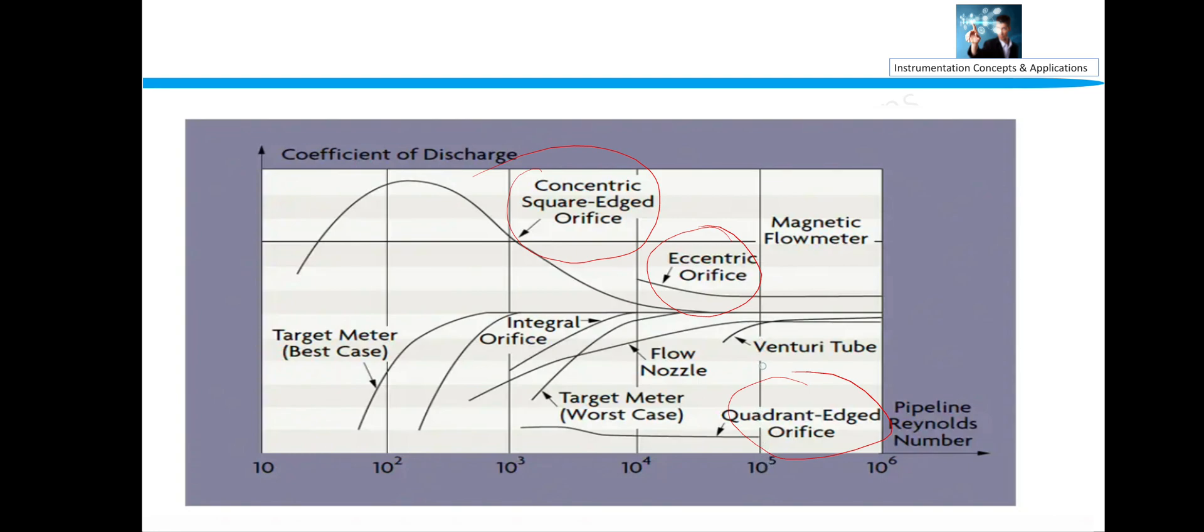And after that, quadrant edge will be used. And if we have a greater coefficient of discharge, then venturi will come into picture. And after that, magnetic flow will come into the picture. And after quadrant edge, the flow nozzle will come, then venturi will come.